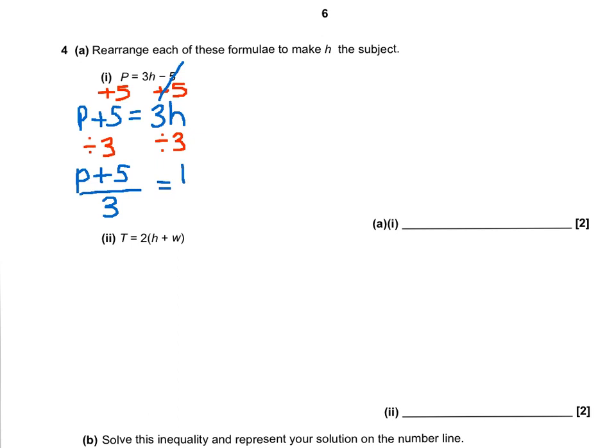And on the right-hand side, we're left with just the h that we're after. So h equals p plus 5, all divided by 3.